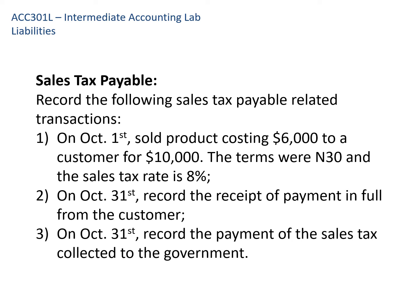The next type of liability is sales tax payable. Businesses collect sales tax and remit it to the government on a regular basis — they're a pass-through from customers to the government. In this example, on October 1st, the company sells inventory that costs $6,000 to a customer for $10,000 with terms net 30, and the sales tax rate is 8%. We'll record the sale, the receipt of payment from the customer on October 31st, and then a separate entry to remit the sales tax to the government.